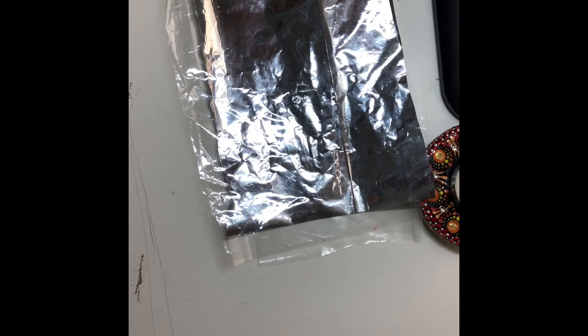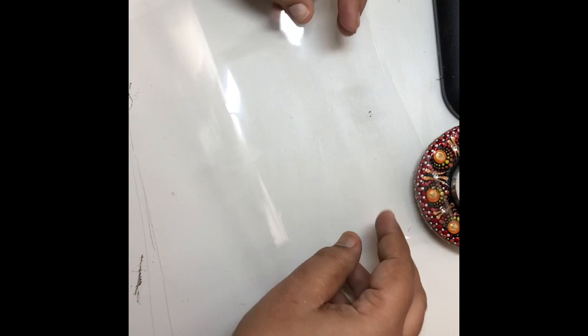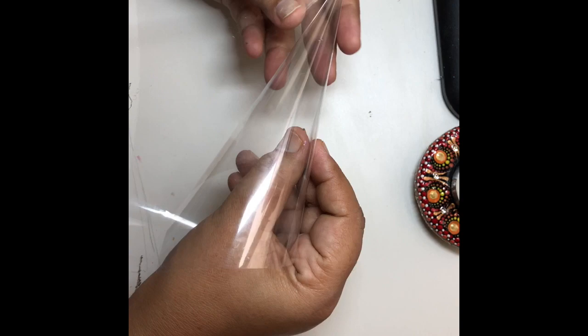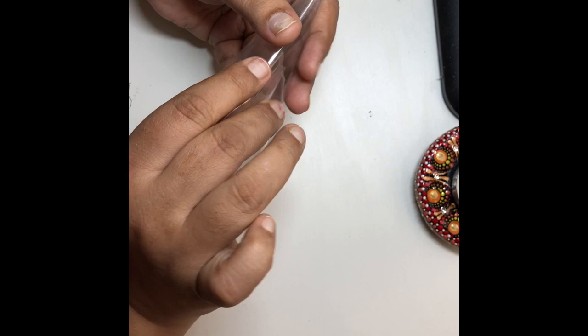For making cone you need around six to seven inches long and four to five inches wide plastic rectangle. Put your thumb in the middle of the plastic and from the other side start folding.